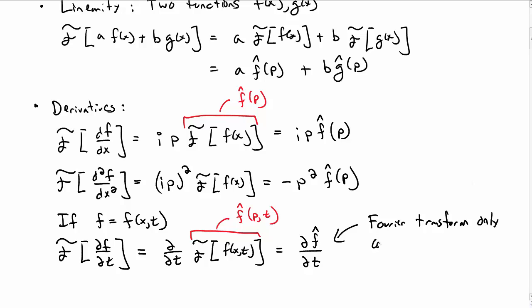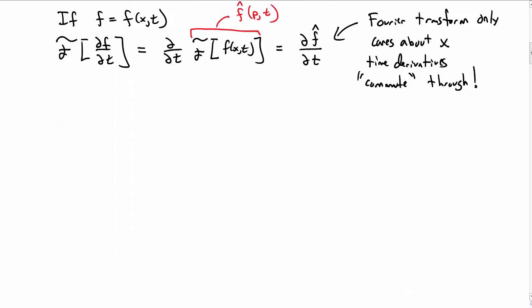What this means is that the Fourier transform really only cares about what happens in the x direction. The time derivatives that you might have in your equation just commute through. They just pass through the Fourier transform. The Fourier transform doesn't care. So those are some of the properties that we're going to need in order to apply the Fourier transform.